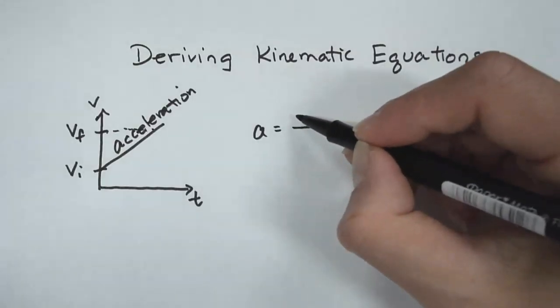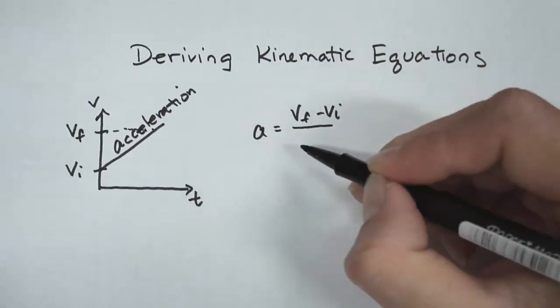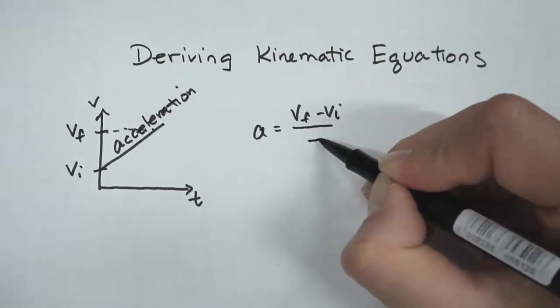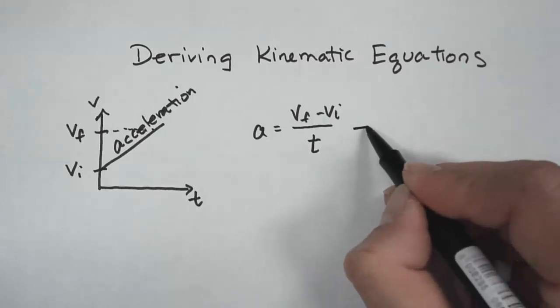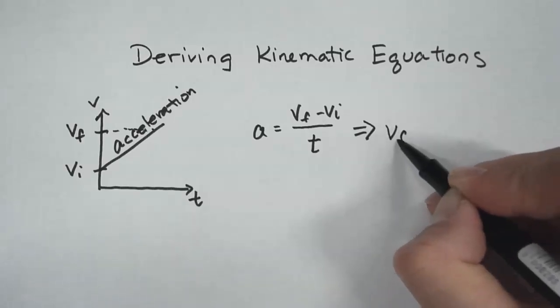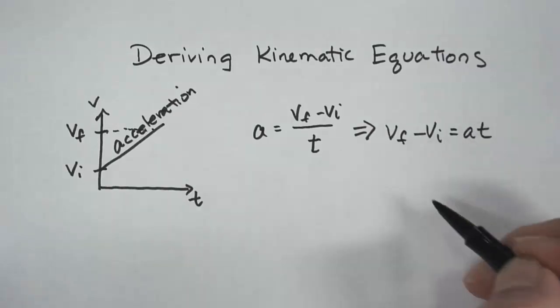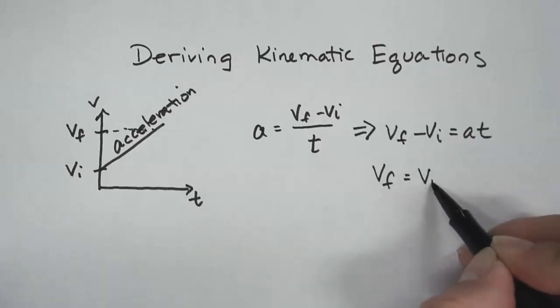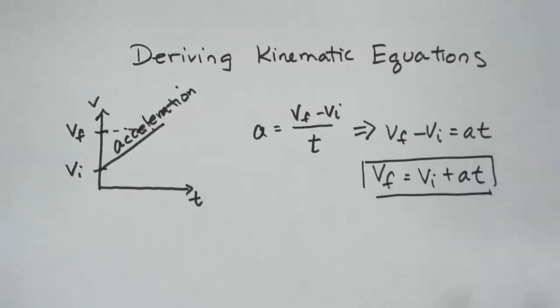So the acceleration is equal to the rise over run, or the y2 minus y1 divided by x2 minus x1. So we have vf minus vi, that's the y2 minus y1, divided by tf minus ti. Now ti is just going to be zero, so I'm just going to use t to represent tf. I can rewrite this as vf minus vi, so I'm going to move the t to the other side, is equal to at. And then if I solve for vf I get vi plus at. And this is our first kinematic equation.